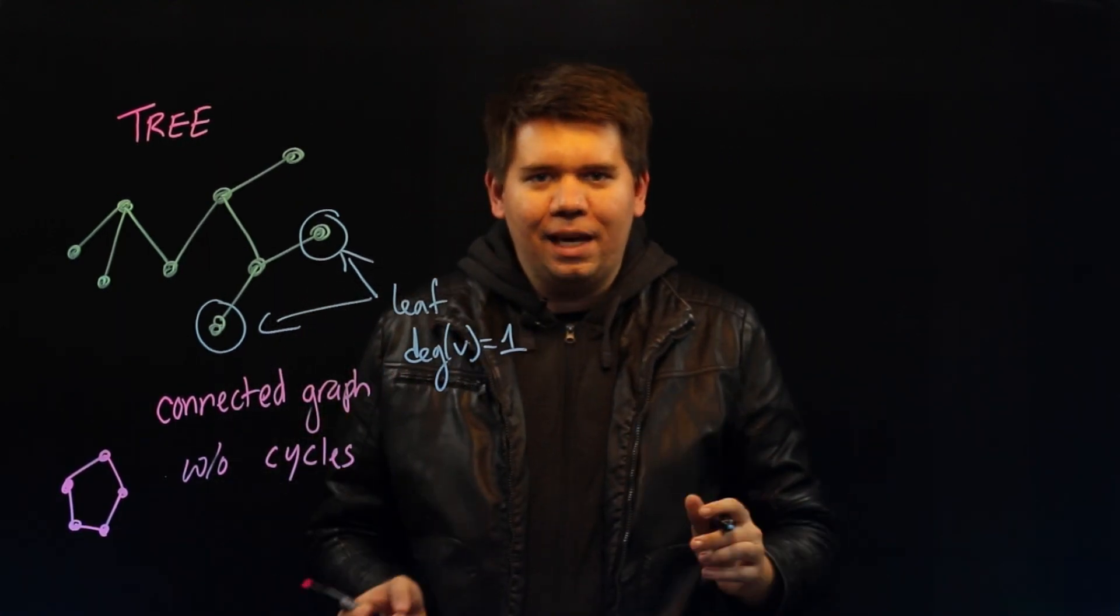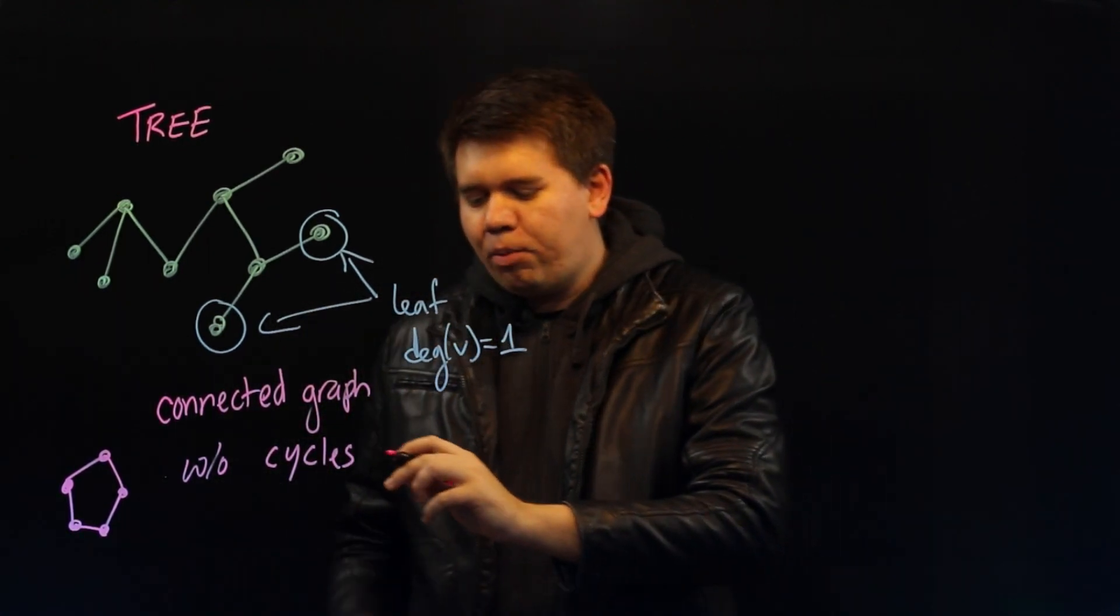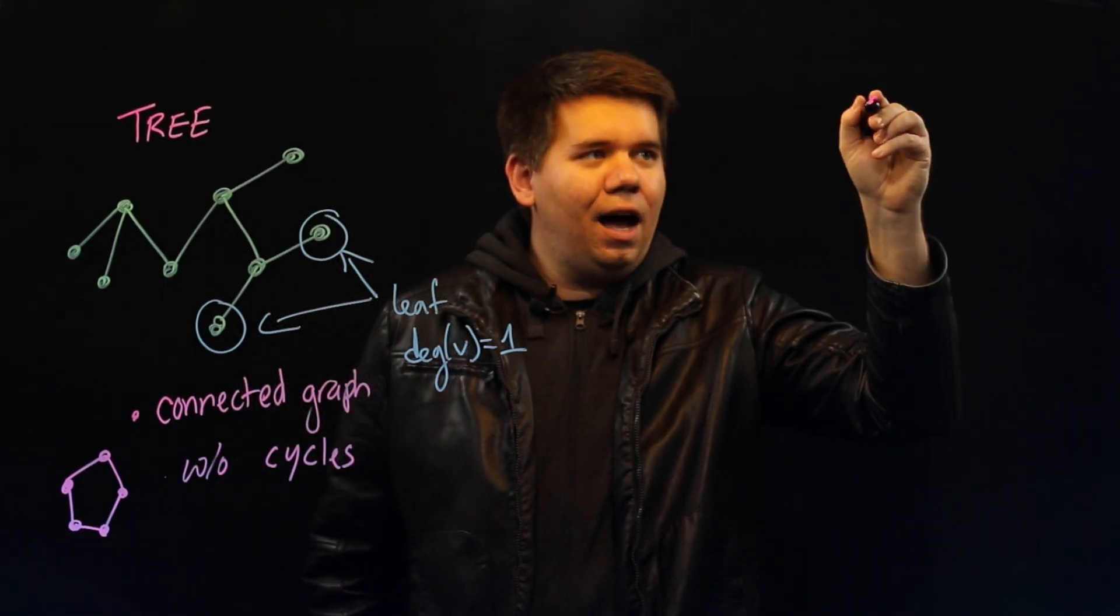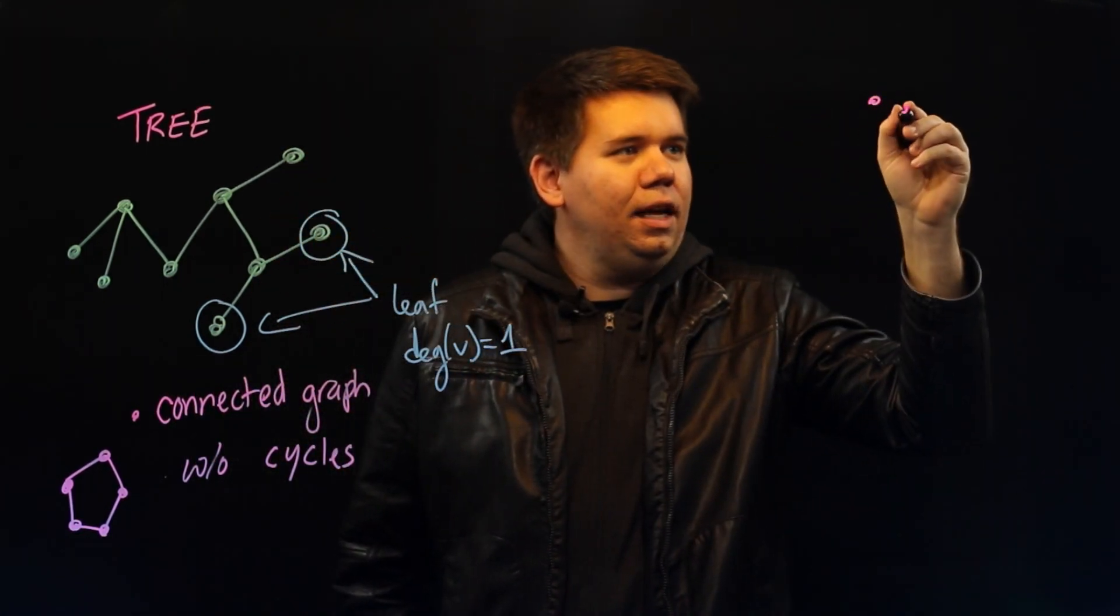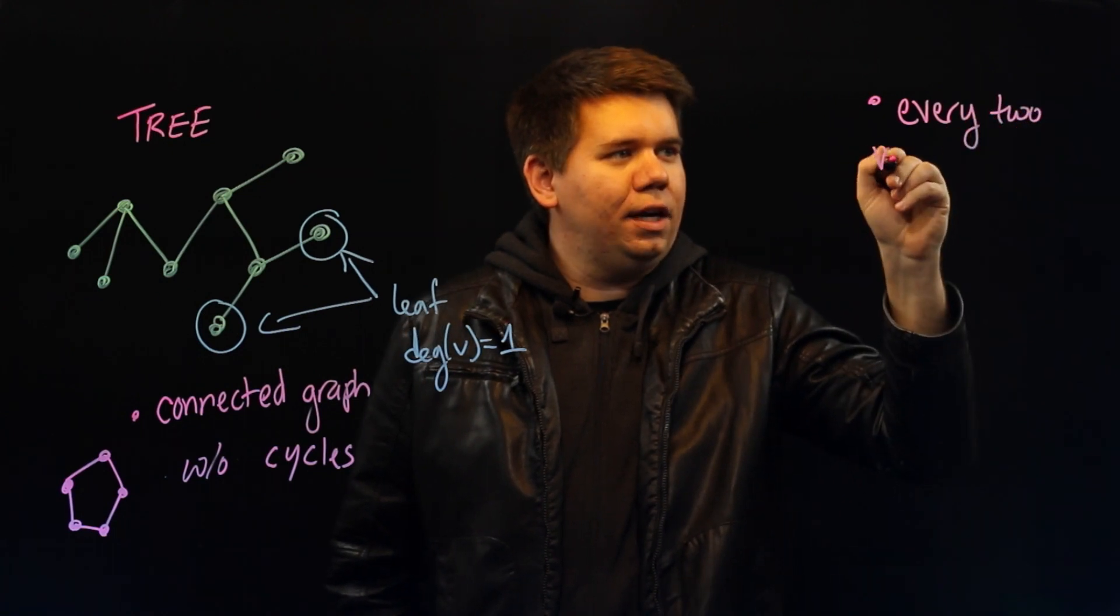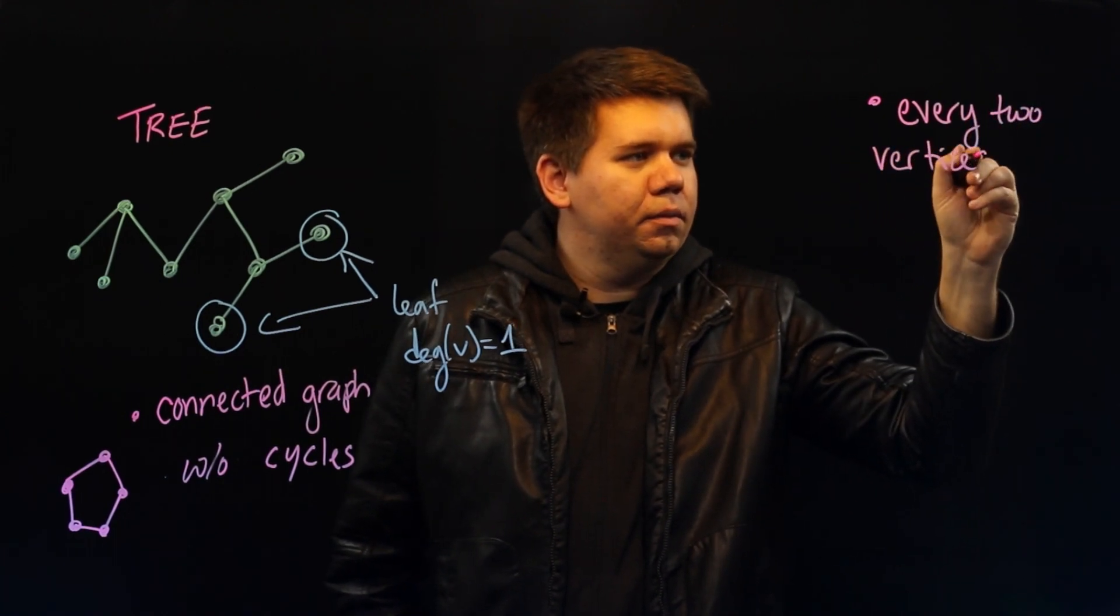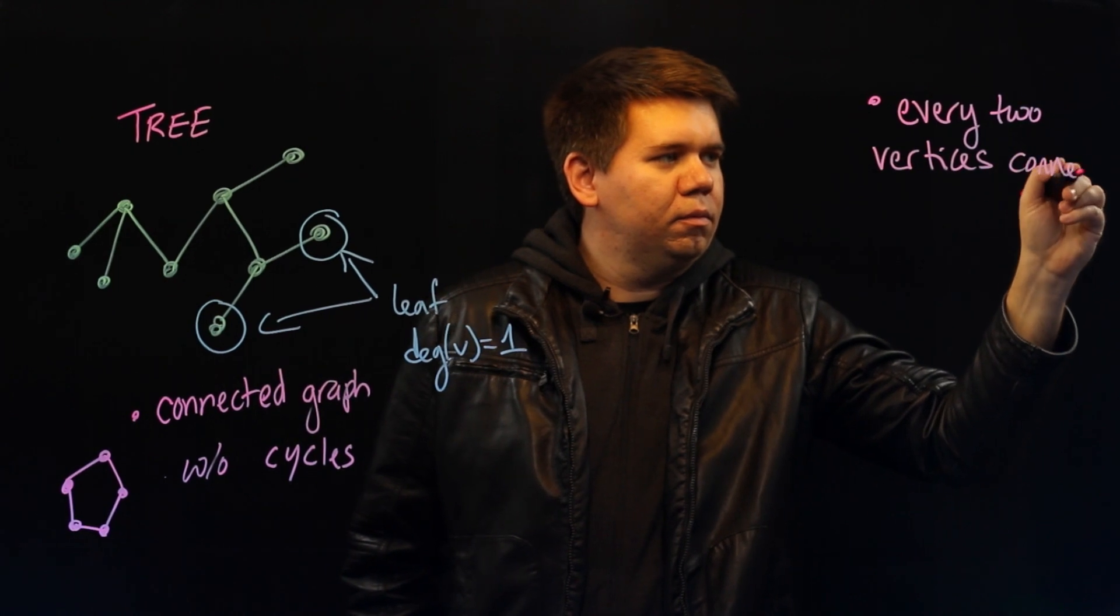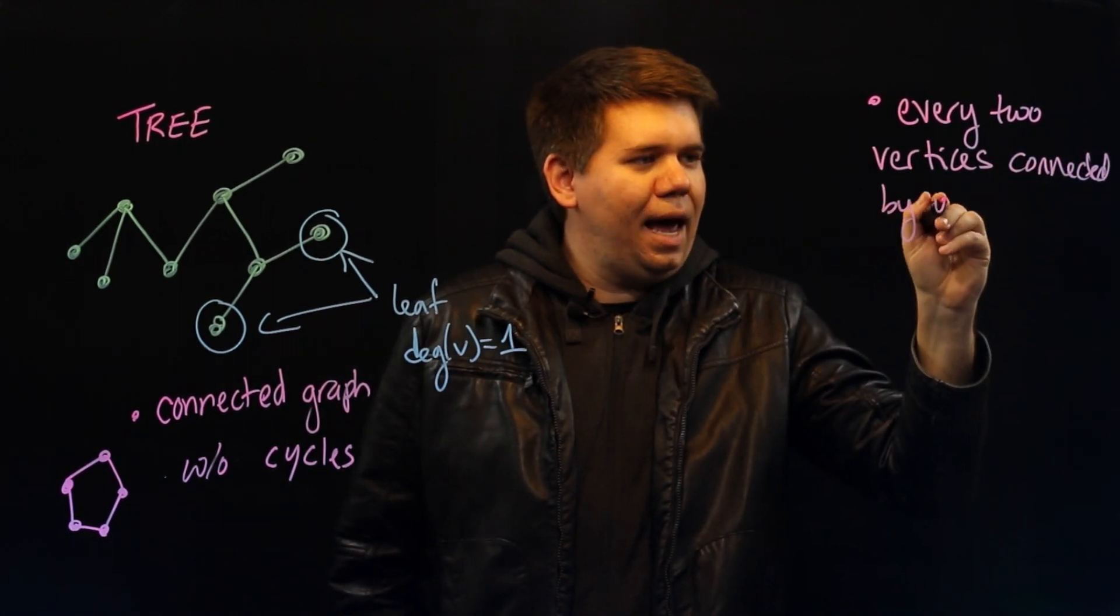What else can we say about trees? Another important property of trees is that on a tree, any two vertices are connected by a unique path.